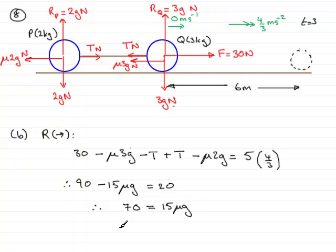So, all I need to do now to get mu, the coefficient of friction, is to divide both sides by 15 g. So, I get mu equals 70 over 15 g. And if I work that out, it comes to exactly 10 over 21.